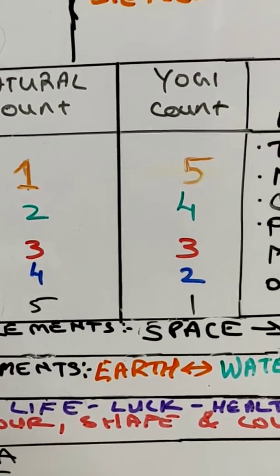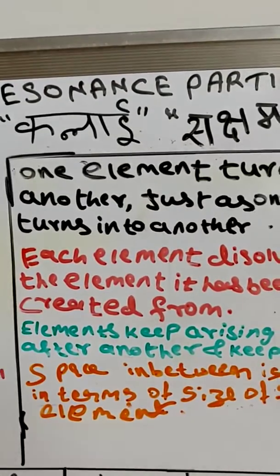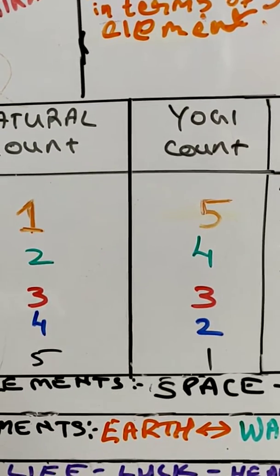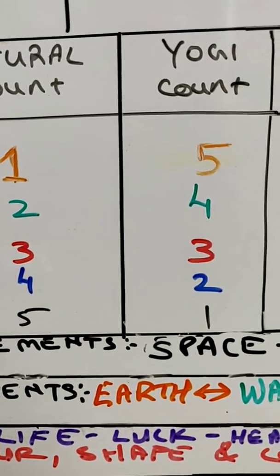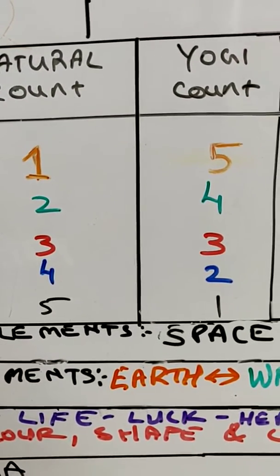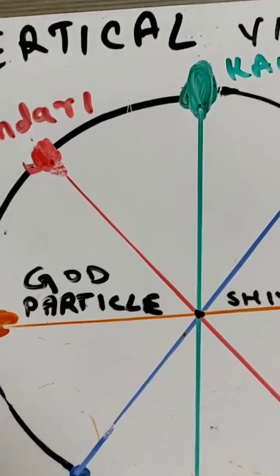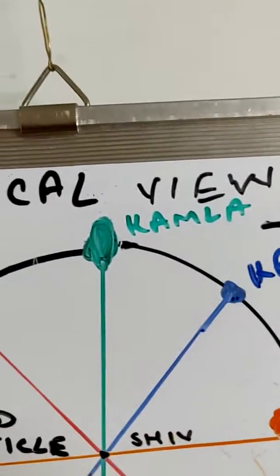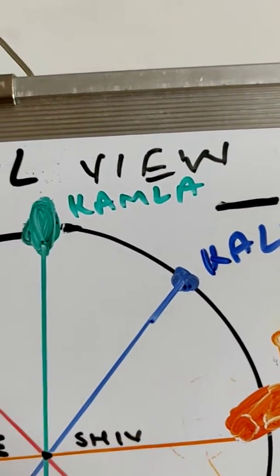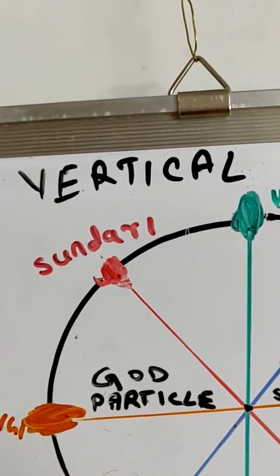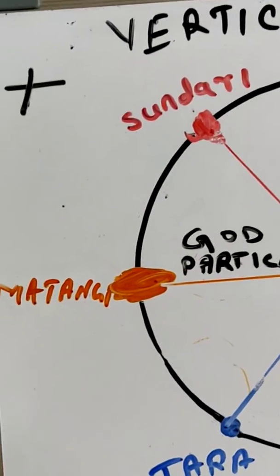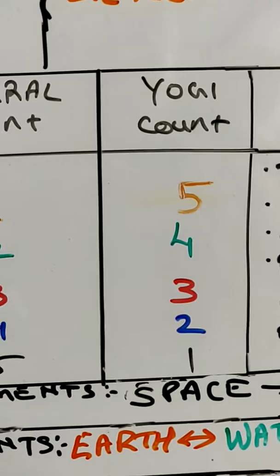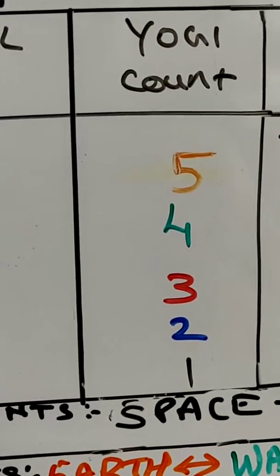The yogic counts are different — the yogi, through yoga practice, mantra, tantra, and tratak, has to influence these counts and reverse them. His subtle elements and resonance particles have to be in this count: earth has to be five, water four, fire three, air two, and space one. Space is the smallest — one — then air a little bigger — two — then fire three, water four, and earth the biggest — five. This is how a yogi changes the counts, which gives health, wealth, happiness, prosperity, and enlightenment.